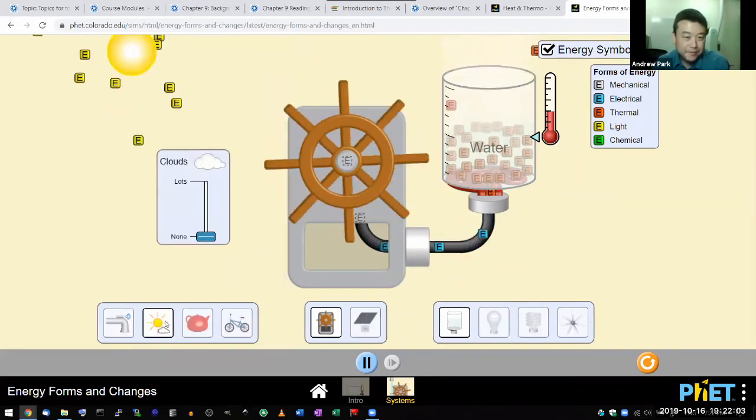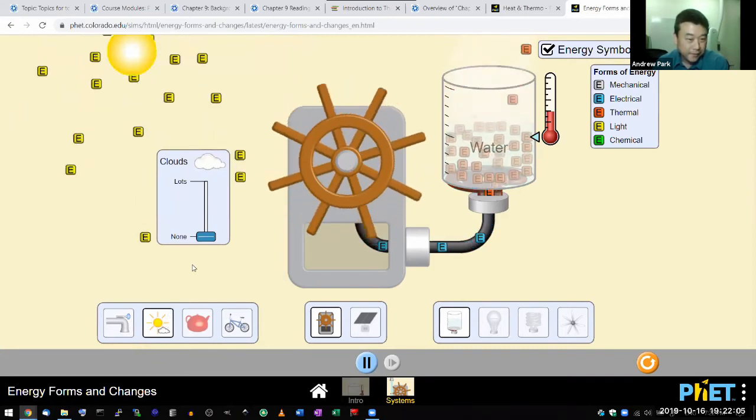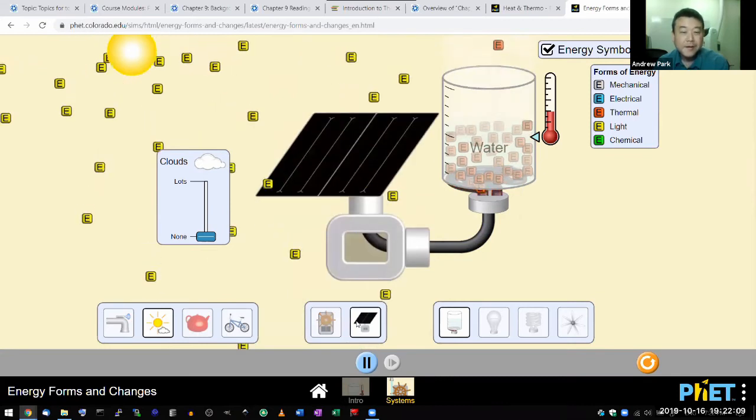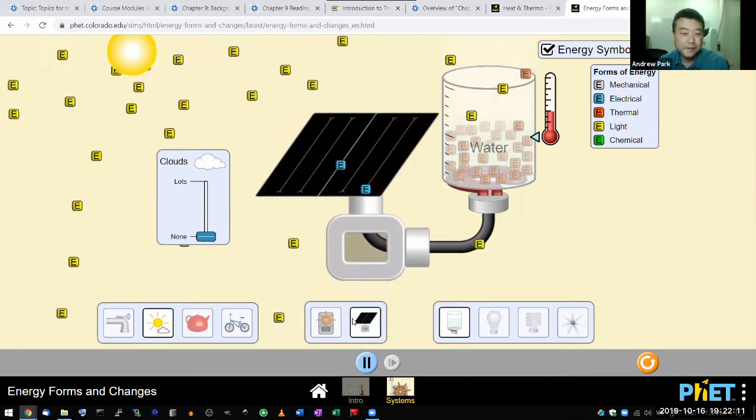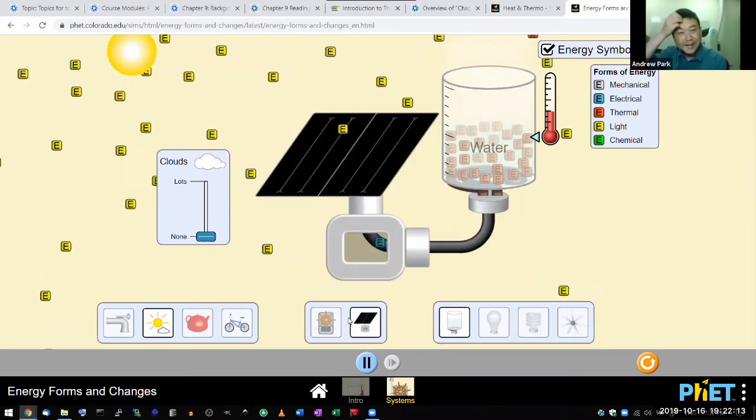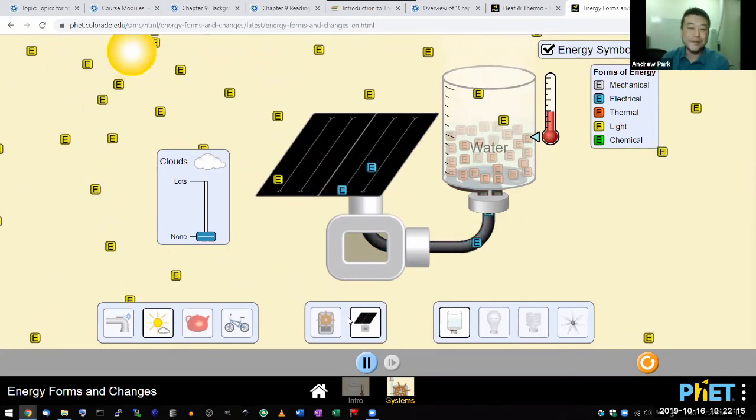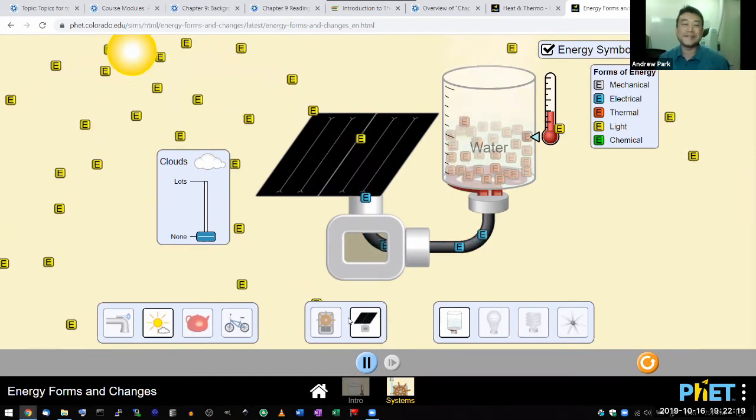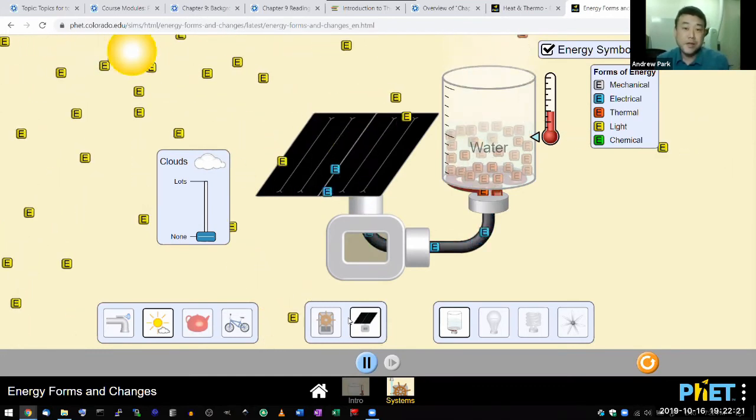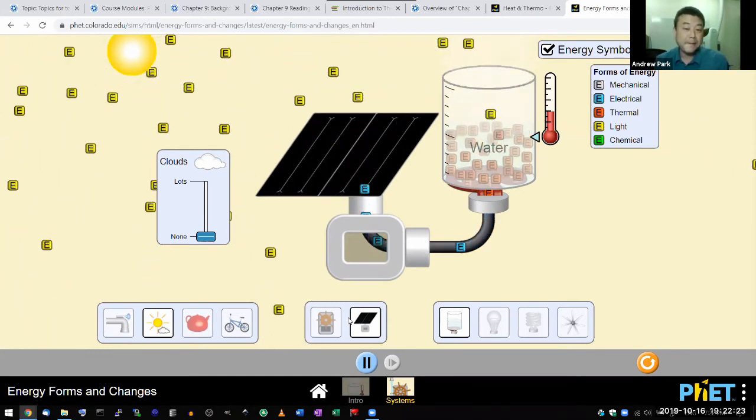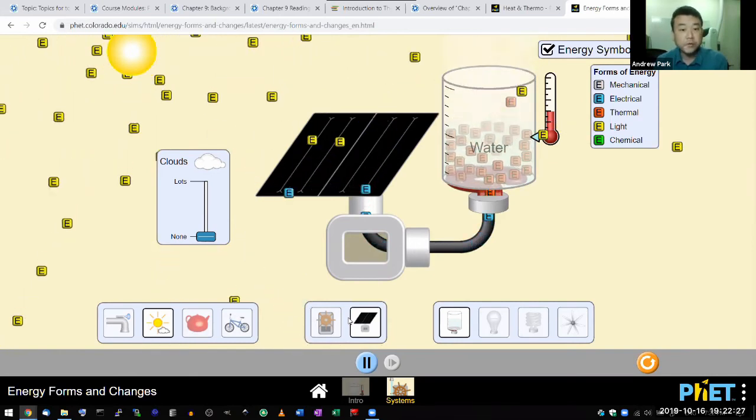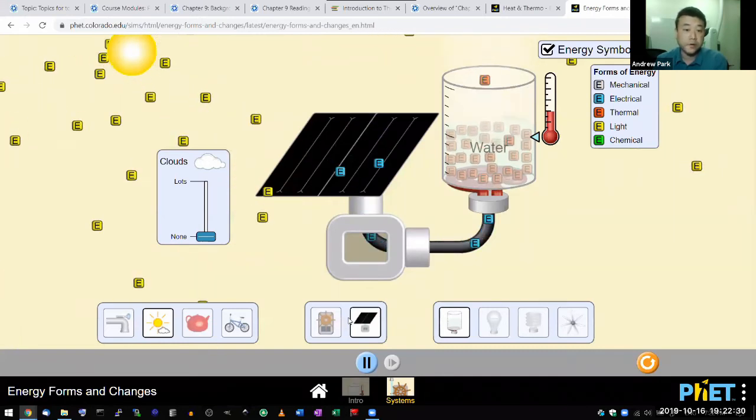You can play with this to see how different configurations work. It's good background material for those of you who haven't seen this in your middle school or high school science class. All this is intuitive, and this is really where we do get our conservation of energy from. Energy is a sort of poorly defined concept where the only one thing that we hold true is that it's a conserved quantity.